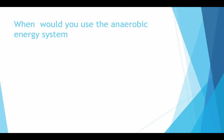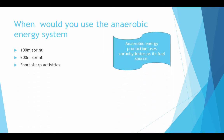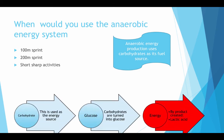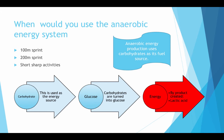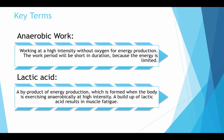When would you use the anaerobic energy system? 100m sprinting, 200m sprinting, short sharp activities. Anaerobic energy production uses carbohydrates as its fuel source. Carbohydrates become glucose, which creates energy, and the by-product of anaerobic energy systems is lactic acid. Key terms: anaerobic work — working at high intensity without oxygen for energy production; the work period will be short in duration because the energy is limited. Lactic acid — a by-product of energy production which is formed when the body is exercising anaerobically at high intensity; a build up of lactic acid results in muscle fatigue.